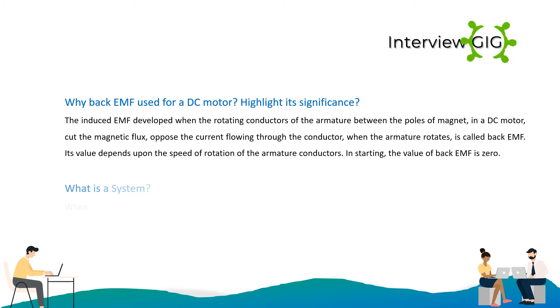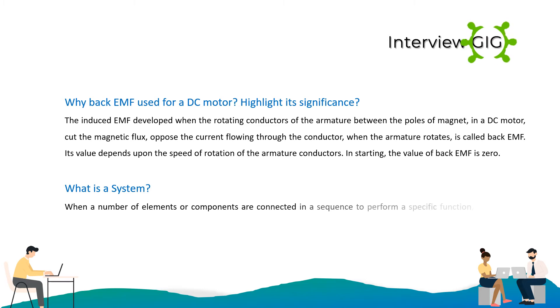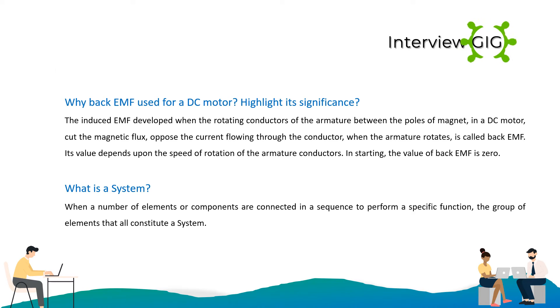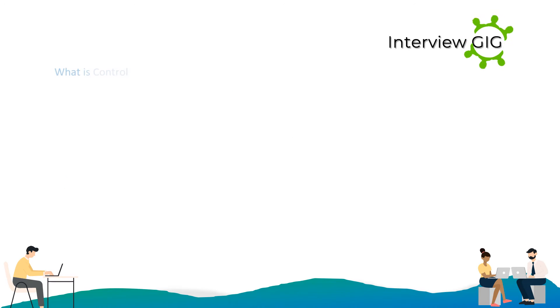What is a system? When a number of elements or components are connected in a sequence to perform a specific function, the group of elements that constitute it is called a system. What is a control system?